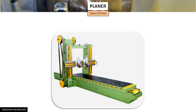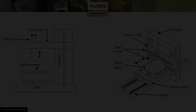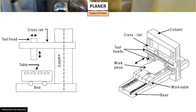A planer is mainly of two kinds: open housing planer and double housing planer. Both kinds of planer are shown here in this particular figure.